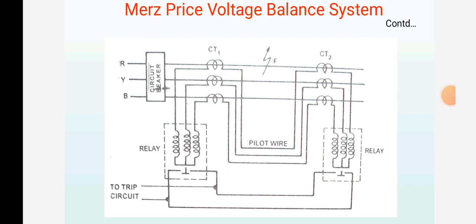In case of internal faults, secondary voltages of CTs become unequal and circulating current flows through the pilot wires and operating coils of the relays. This figure shows the connections of the Merz-Price voltage balance scheme for all three phases of the line.